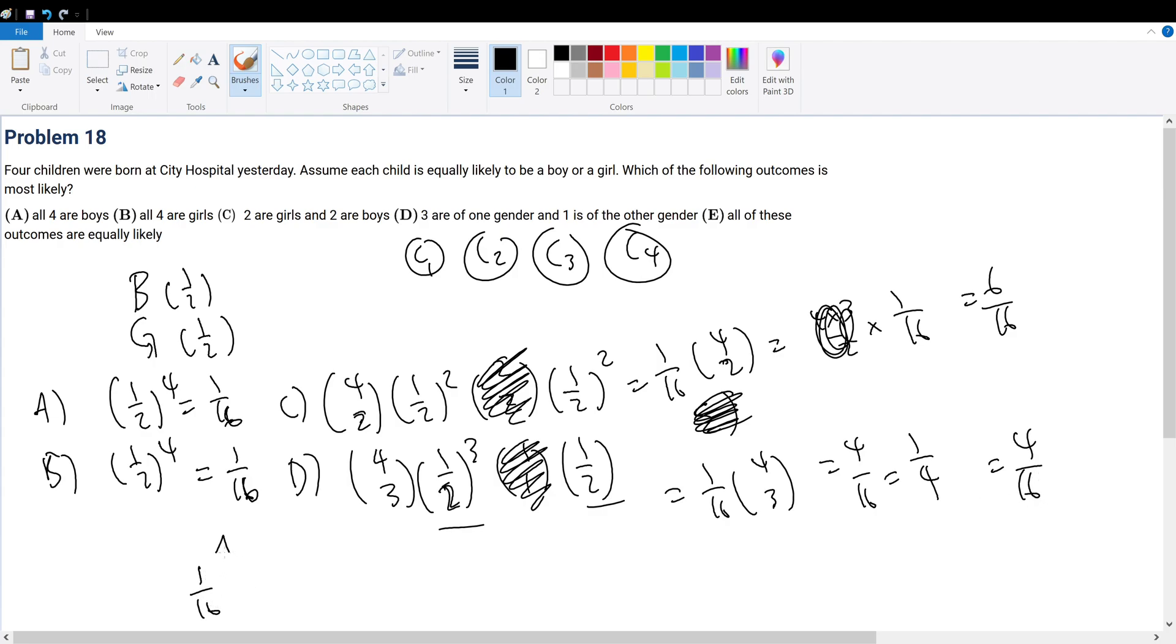1 over 16 for A, 1 over 16 for B. We have 6 over 16 for C, and 4 over 16 for D. And so, if we were to solve this, wait, I think I did something wrong. A is that, B is that, C is that.